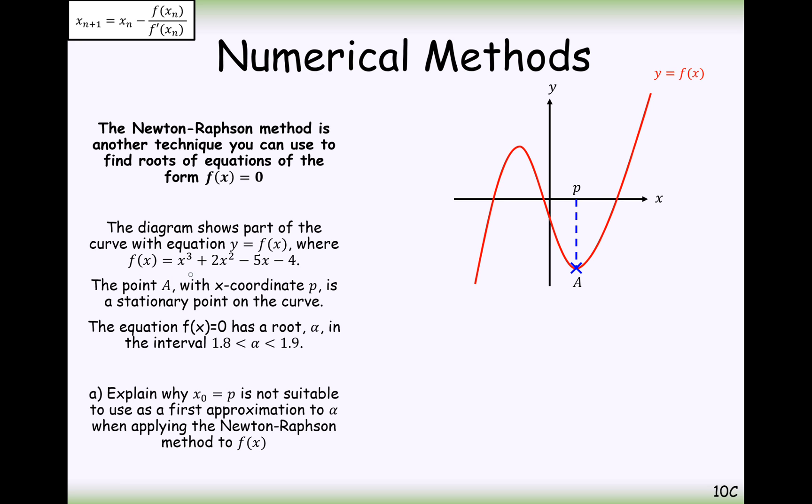In this question, we have f(x) equals x³ plus 2x² minus 5x minus 4. We've set a starting point A at the coordinate P, a stationary point to the curve. The equation f(x) equals 0 has roots alpha in between 1.8 and 1.9. Explain why x₀ equals P is not a suitable first approximation to alpha when using the Newton-Raphson method. So it is not appropriate to pick a stationary point as our starting value because the tangents will not intersect the x-axis at any other point. Or effectively, if you go back to this formula here, if you differentiate and substitute in the coordinate of a stationary point, your gradient will equal zero and you'll end up with a fraction that is dividing by zero.